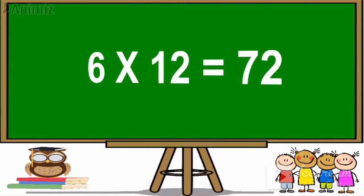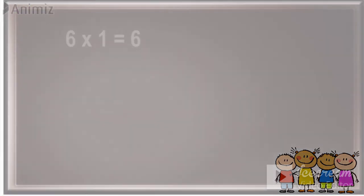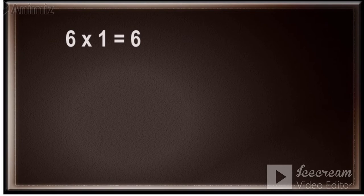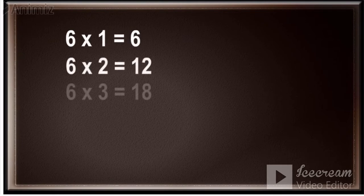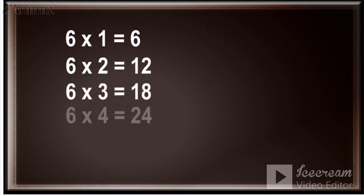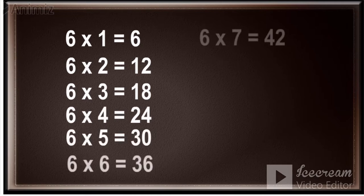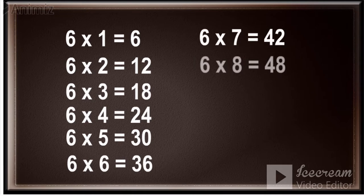Now repeat again. 6 ones are 6. 6 twos are 12. 6 threes are 18. 6 fours are 24. 6 fives are 30. 6 sixes are 36. 6 sevens are 42.